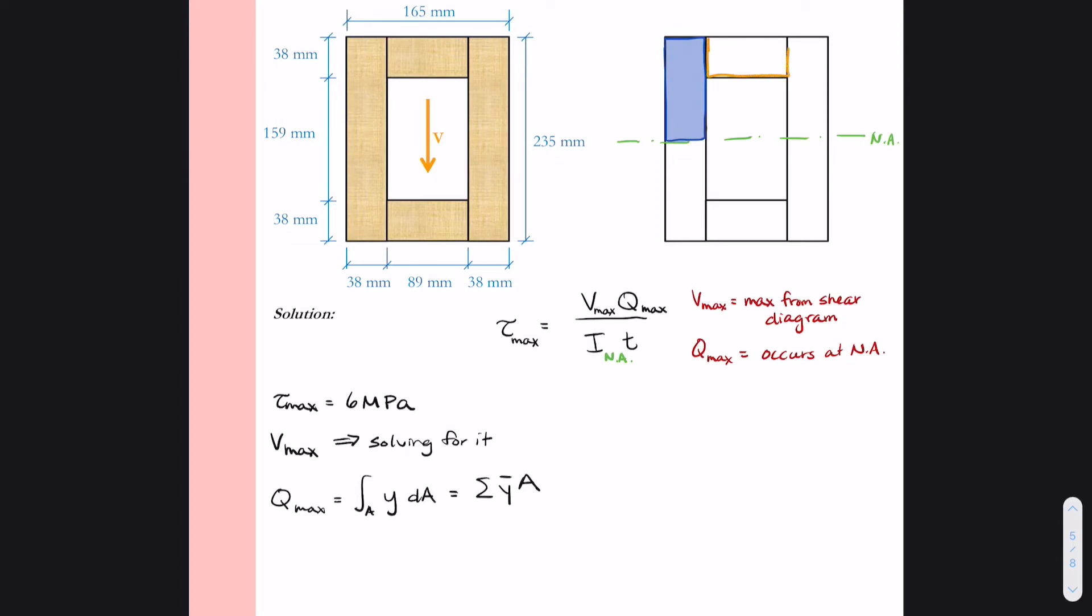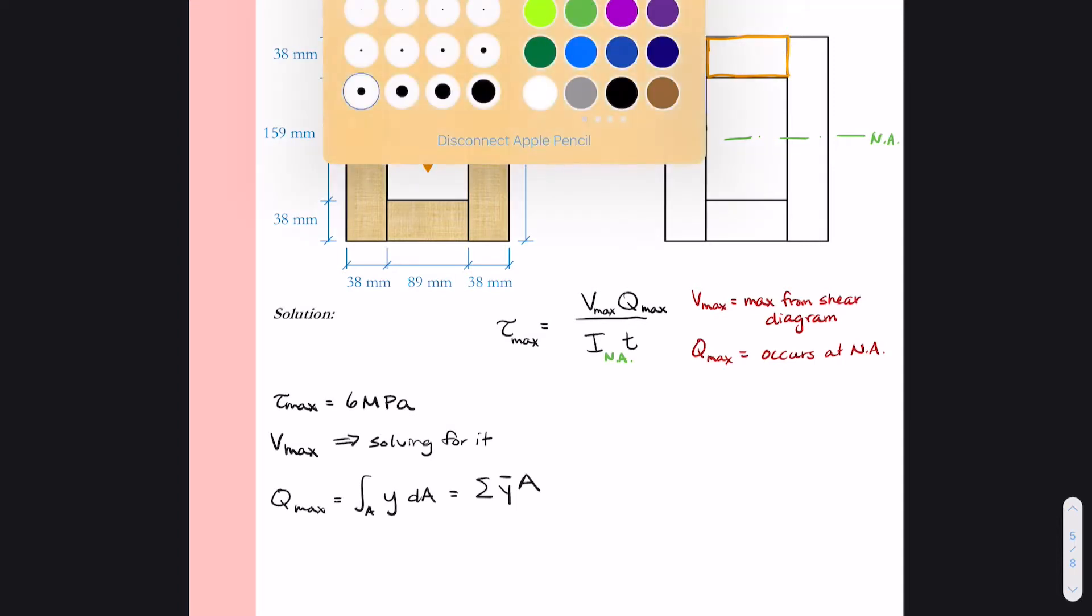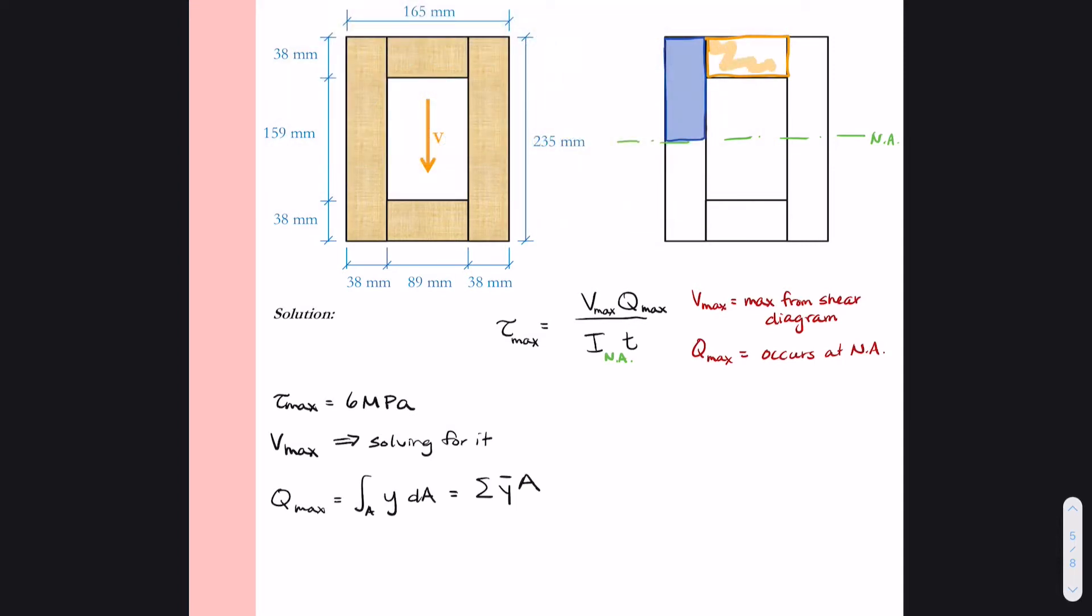They will be equal in terms of their values for Q. So I see that I can break this up into rectangles and dividing it into the blue rectangle and then we have the orange rectangle and then we have another rectangle on the right.